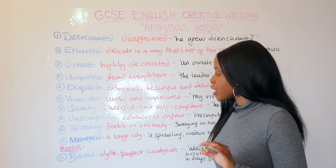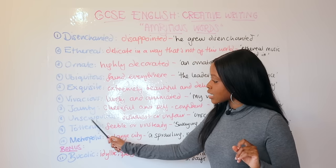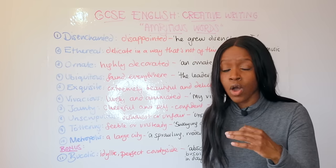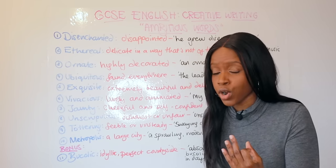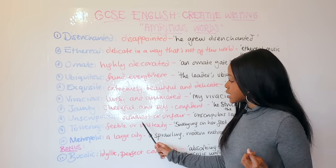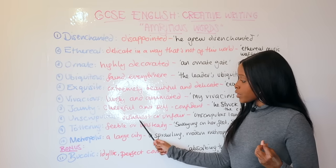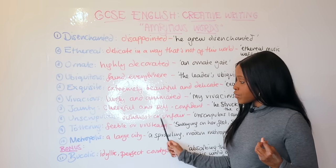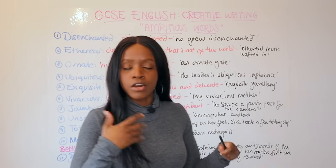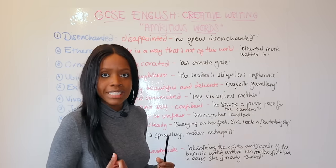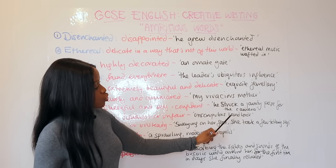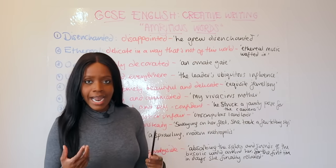The eighth ambitious word is 'unscrupulous,' which is a negative adjective meaning dishonest or unfair. You can describe an unscrupulous businessman or, in another context, unscrupulous landlords.